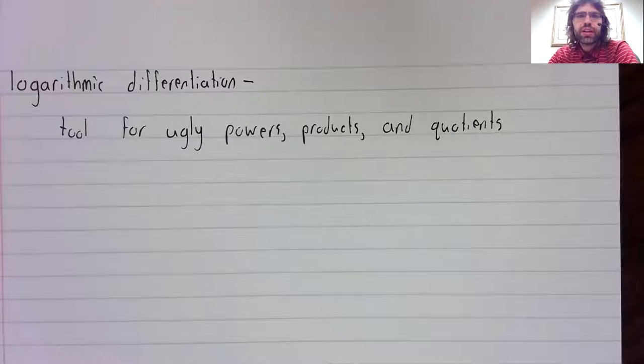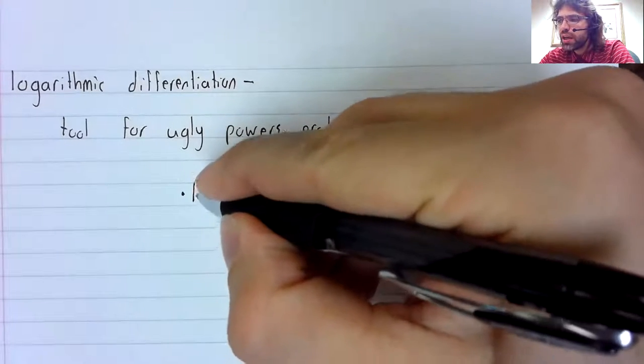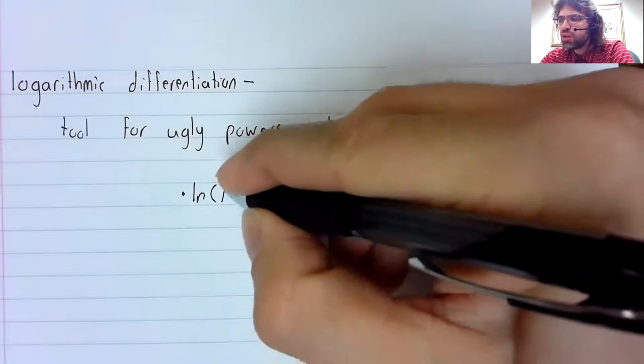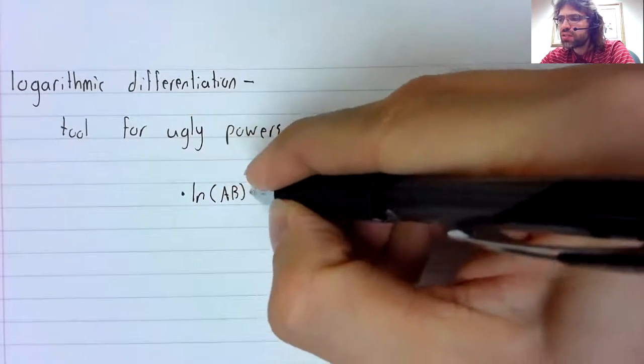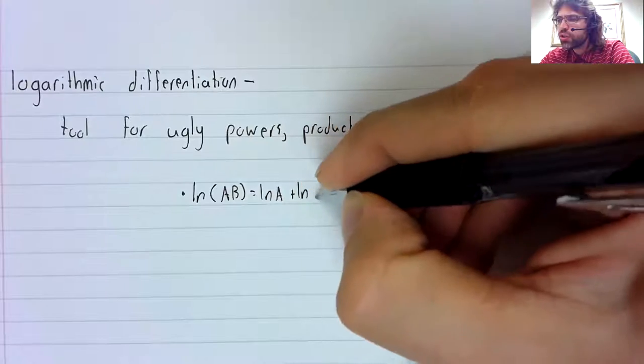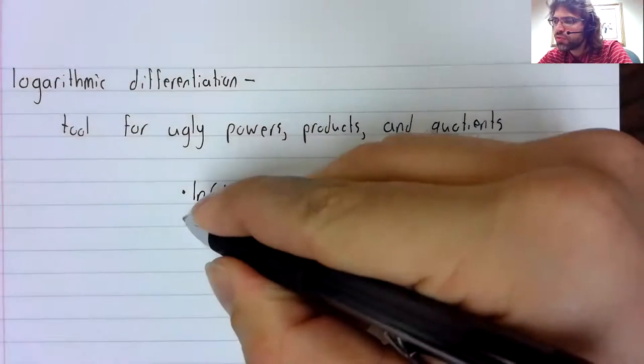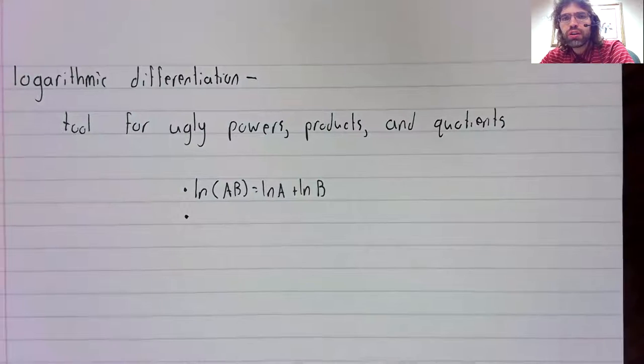Logarithmic differentiation is a tool for differentiating ugly powers, products, and quotients. It's based on these facts of the logarithm, which you may remember from algebra.